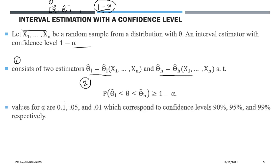The value of alpha is the probability of rejection — the probability that theta does not fall in the interval. Alpha is typically very small: 10%, 5%, or 1%. If alpha is 0.1, then one minus alpha is 0.9, meaning 90% confidence level. Alpha 0.05 corresponds to 95% confidence level, and alpha 0.01 corresponds to 99% confidence level.